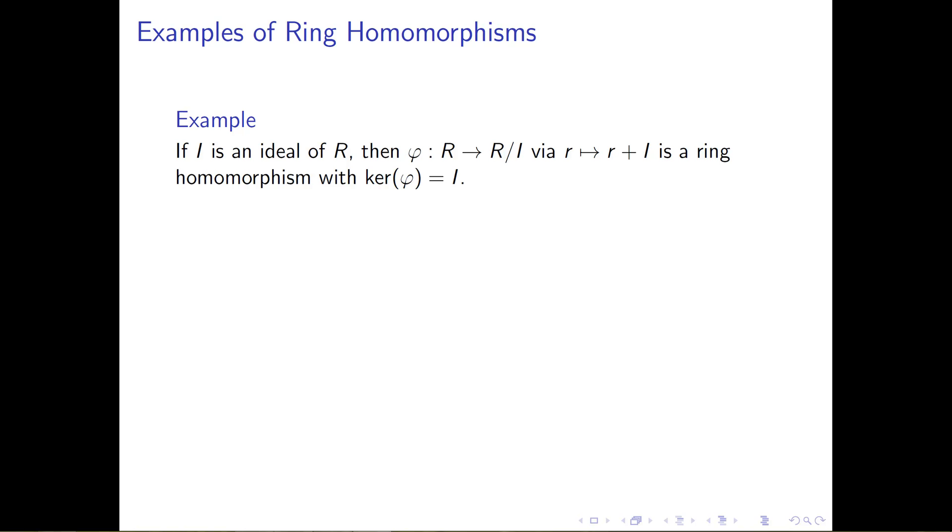So the example that I want to cover here that's theoretical is if we start with I, an ideal of a ring R, then we saw last time that we can form a factor ring R mod I, and that's going to be our ring S.